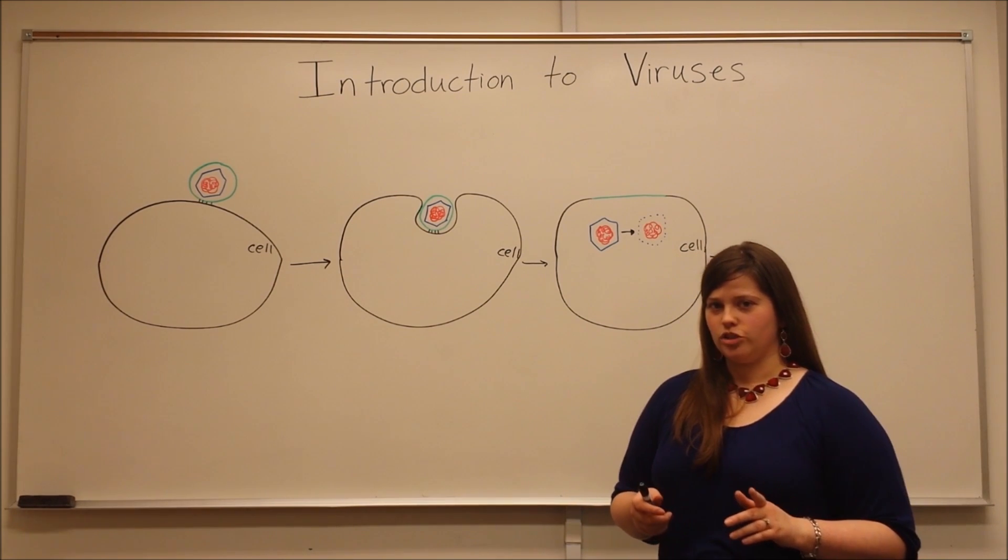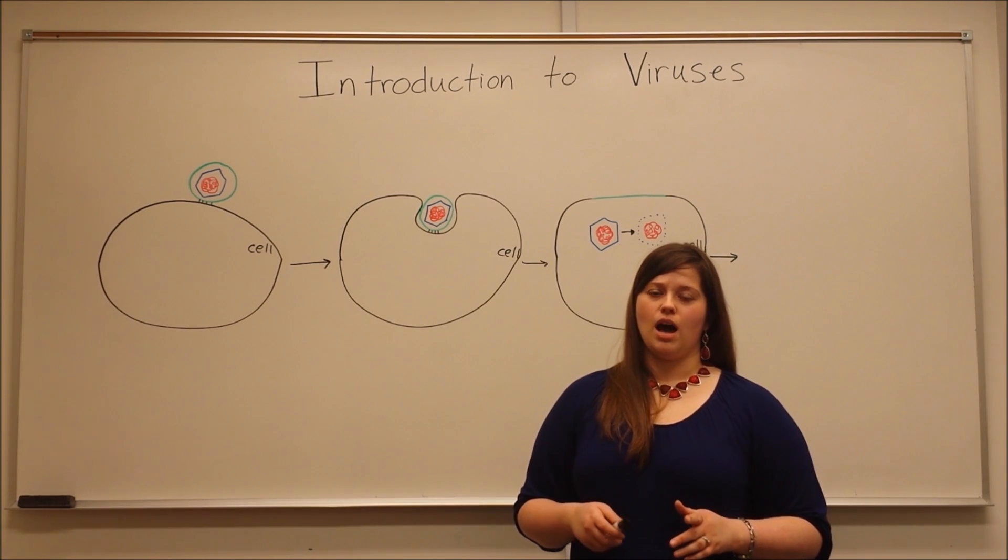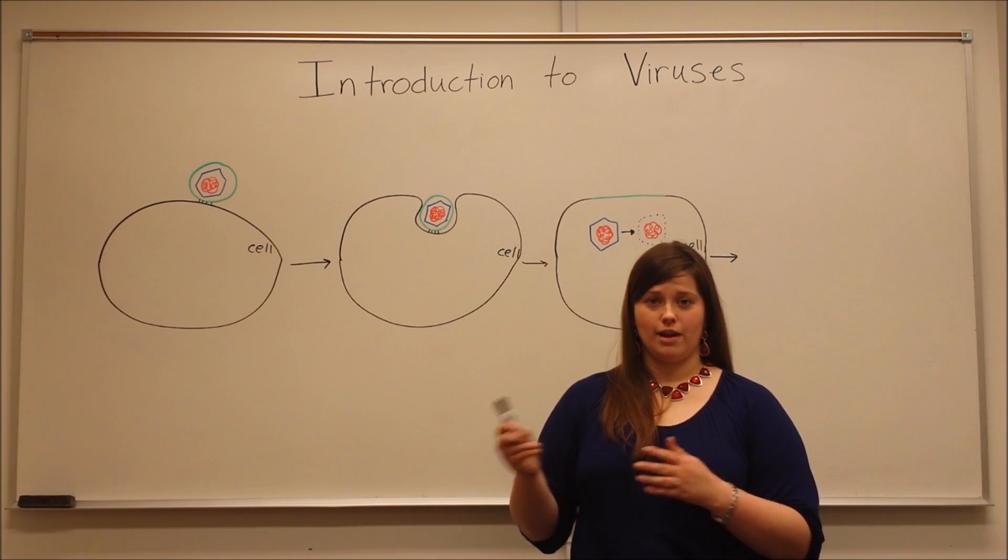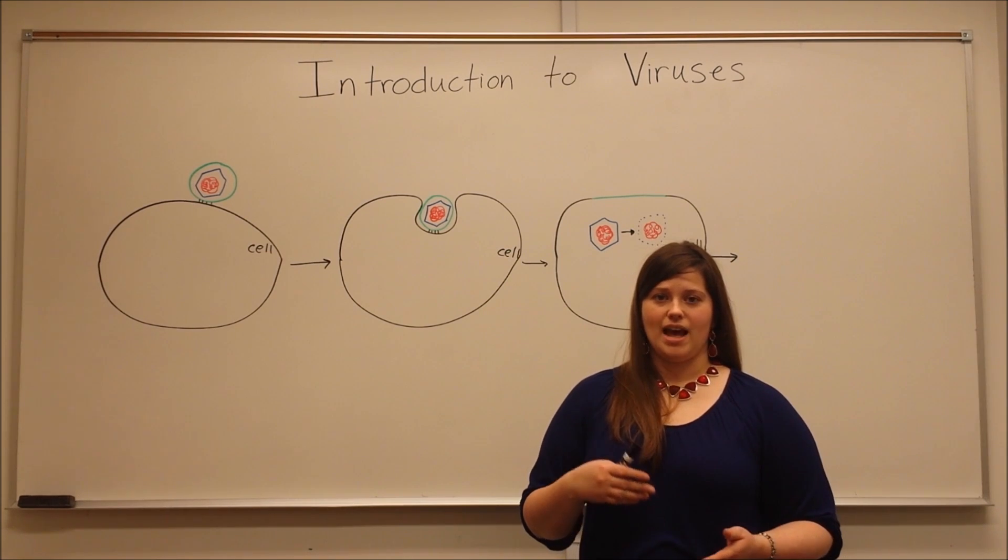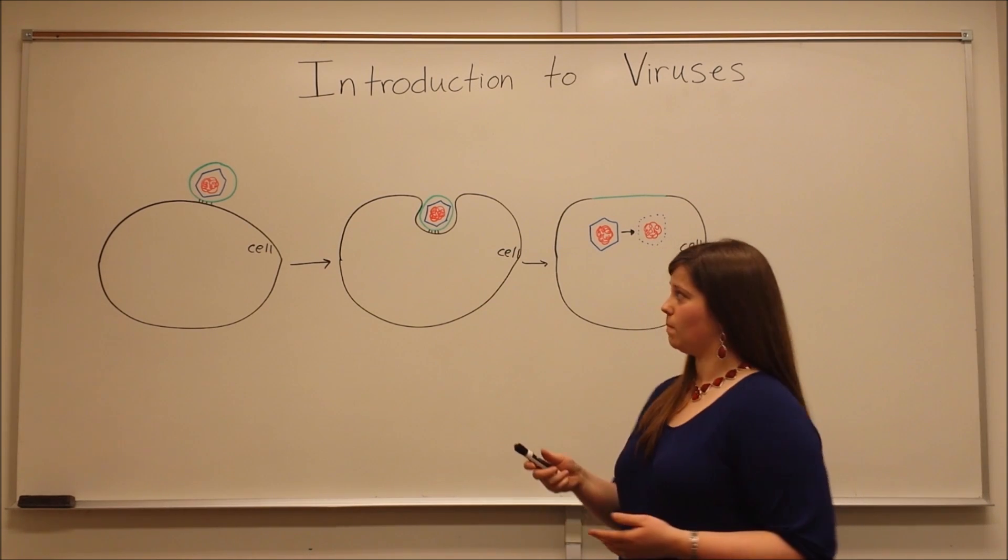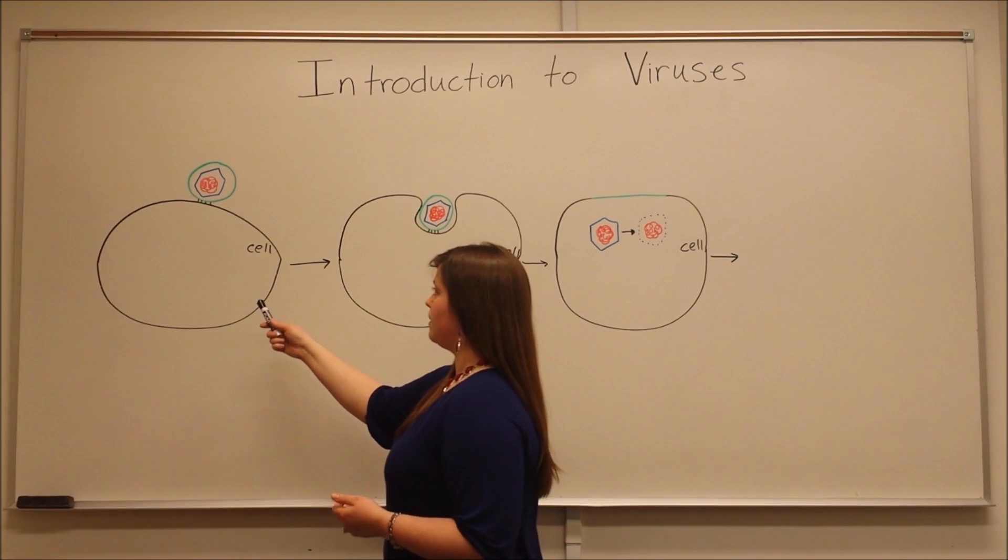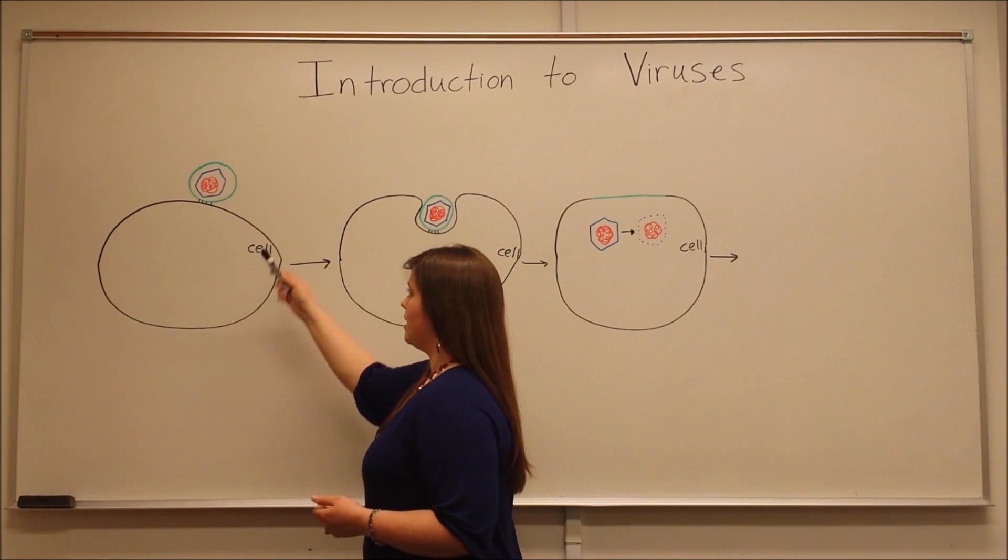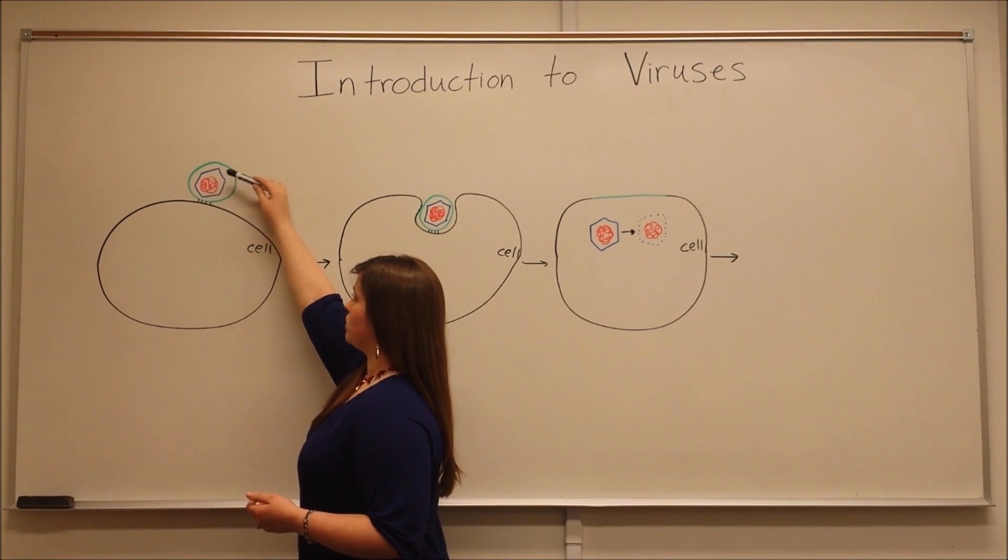For today, we're just going to use the example of an animal cell virus, so a virus that infects animal cells that has a DNA core. Let's start over here. In black, we have the cell. Here we have the red nucleic acid core, the blue capsid, and the green envelope.